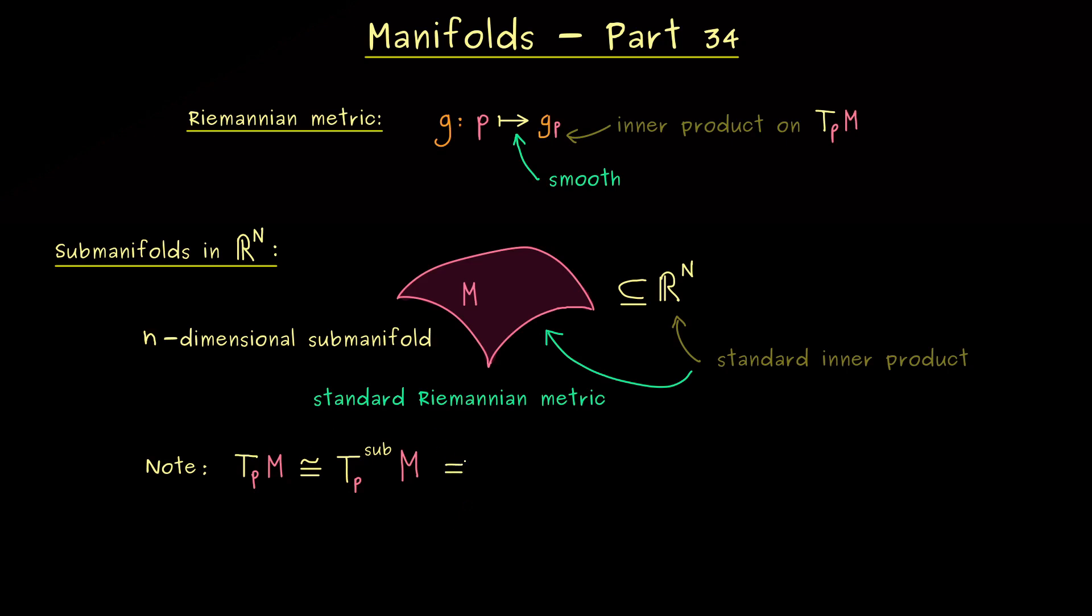But the good thing for this submanifold tangent space is that the tangent vectors are immediately given. More precisely, if we have a parameterization phi, we just need the partial derivatives here. And because the dimension of the tangent space here is n, we only need n tangent vectors. Hence, in this sense, the parameterization phi gives us all the tangent vectors we need. And then by just writing the span, we have the whole tangent space embedded in R^N.